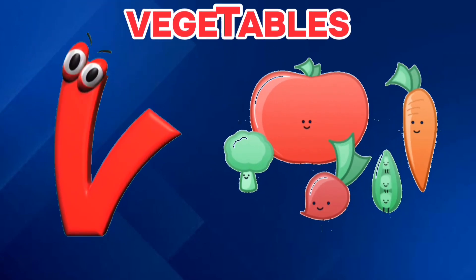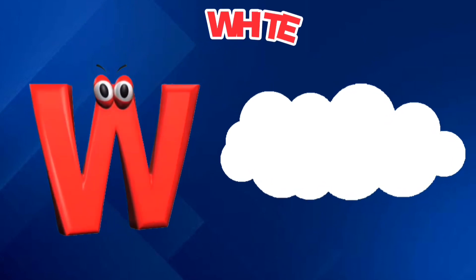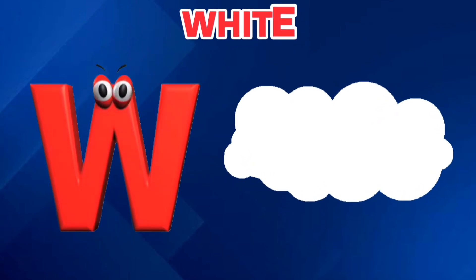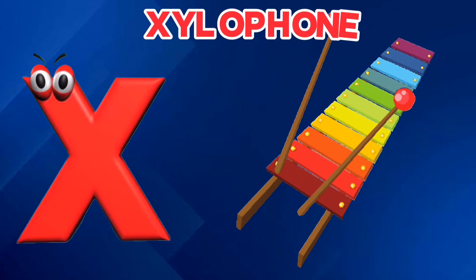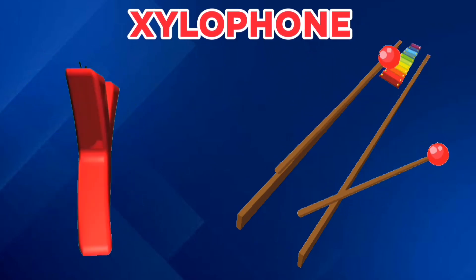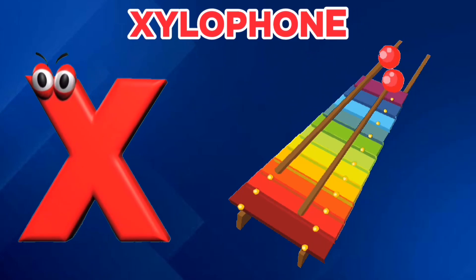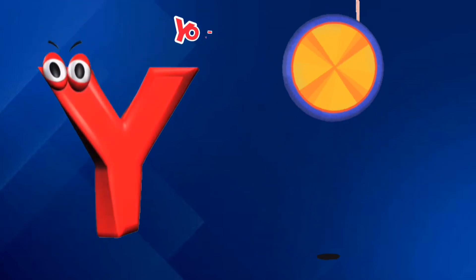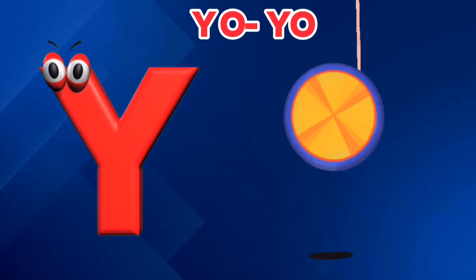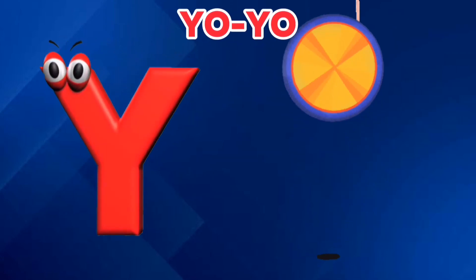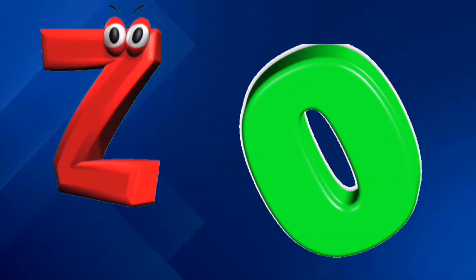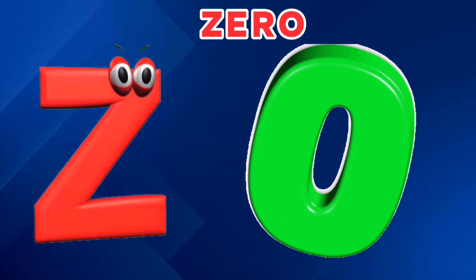V is for Vegetables. W is for White. X is for Xylophone. Y is for Yoyo.